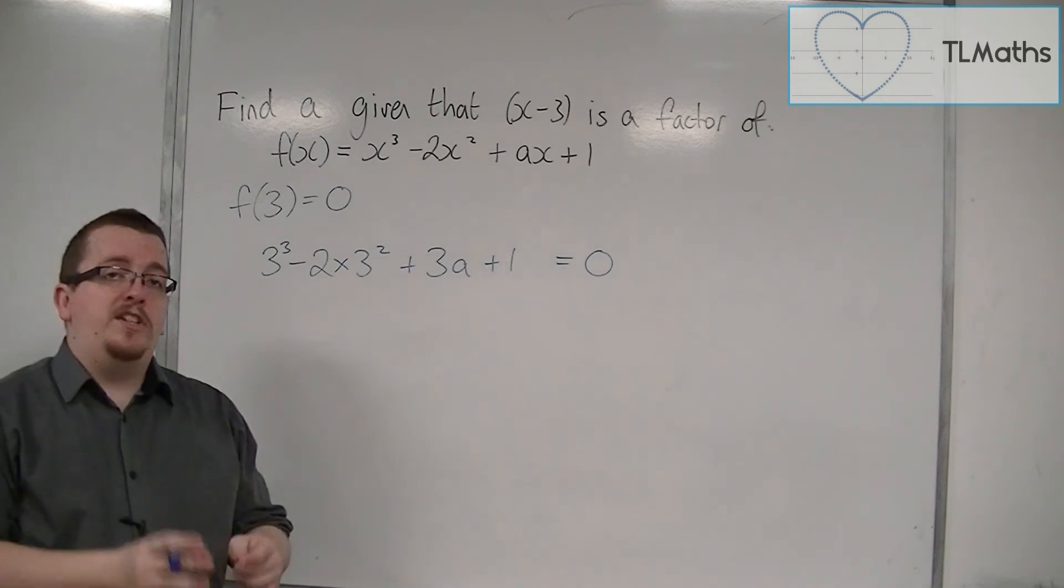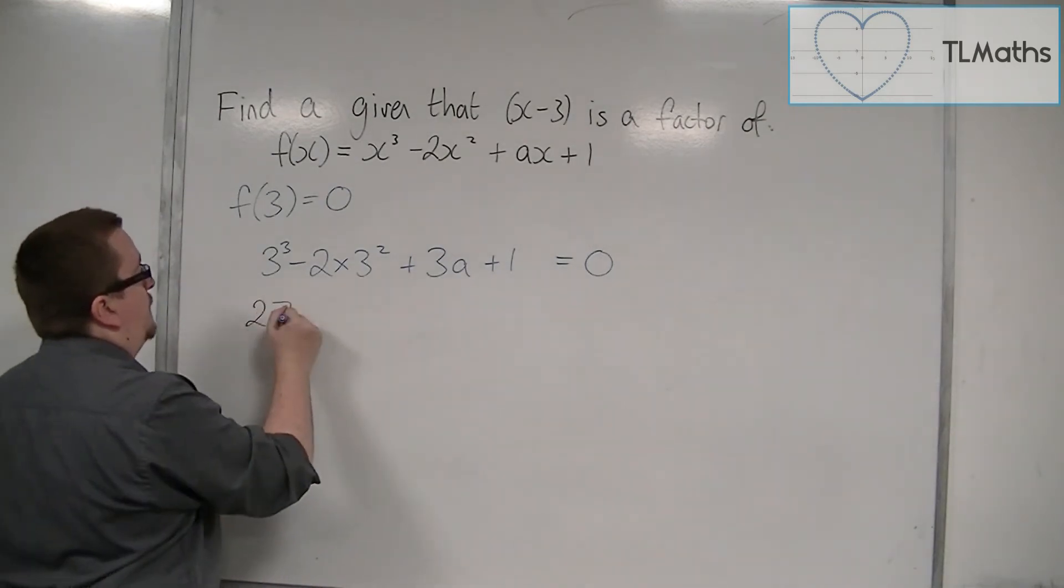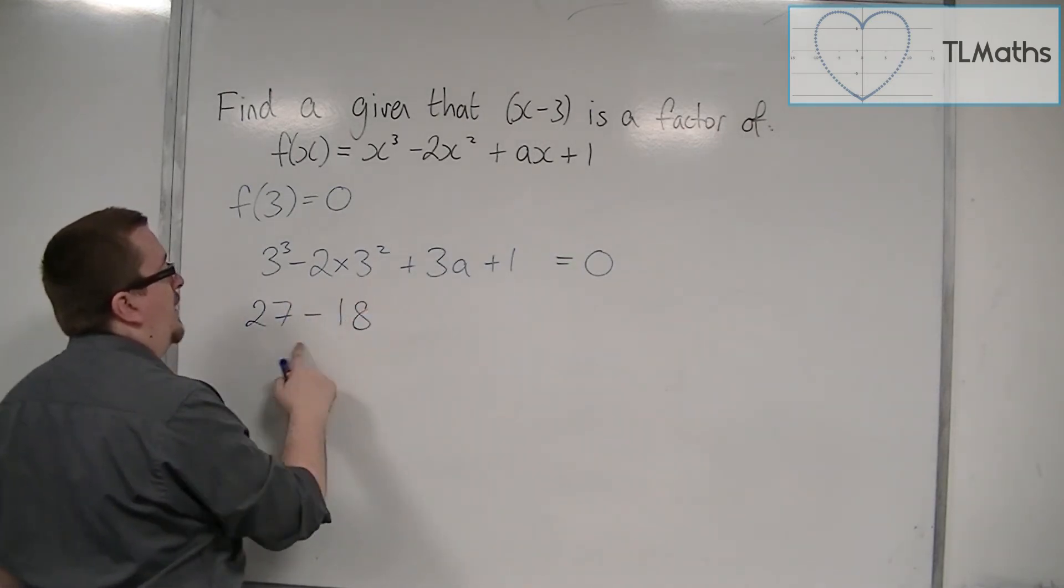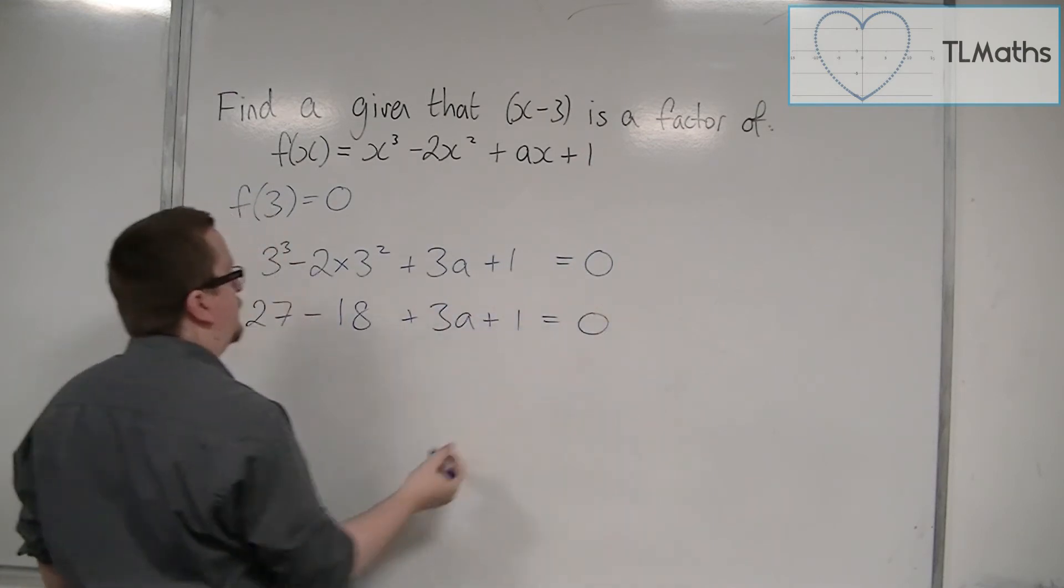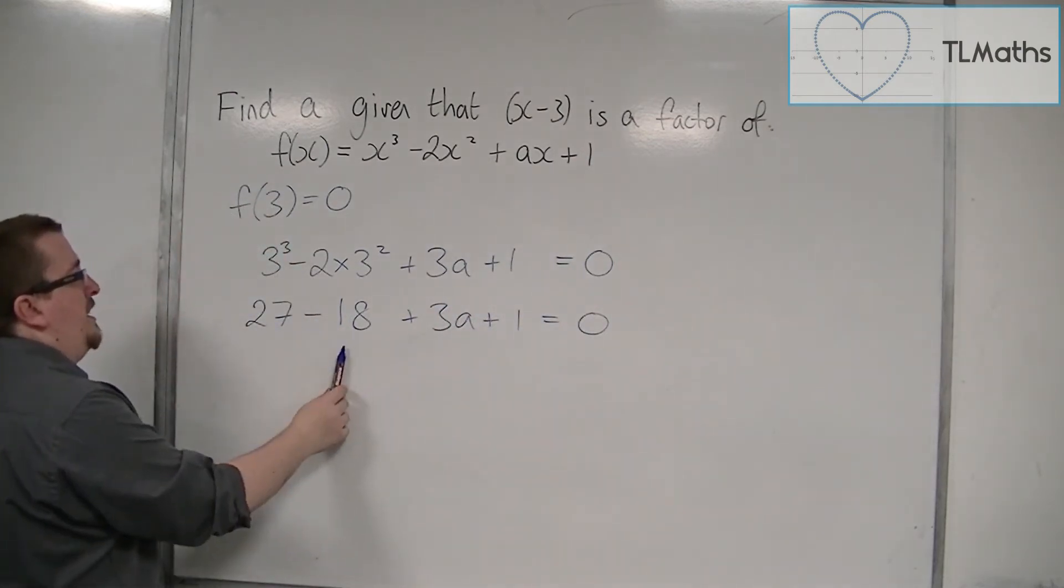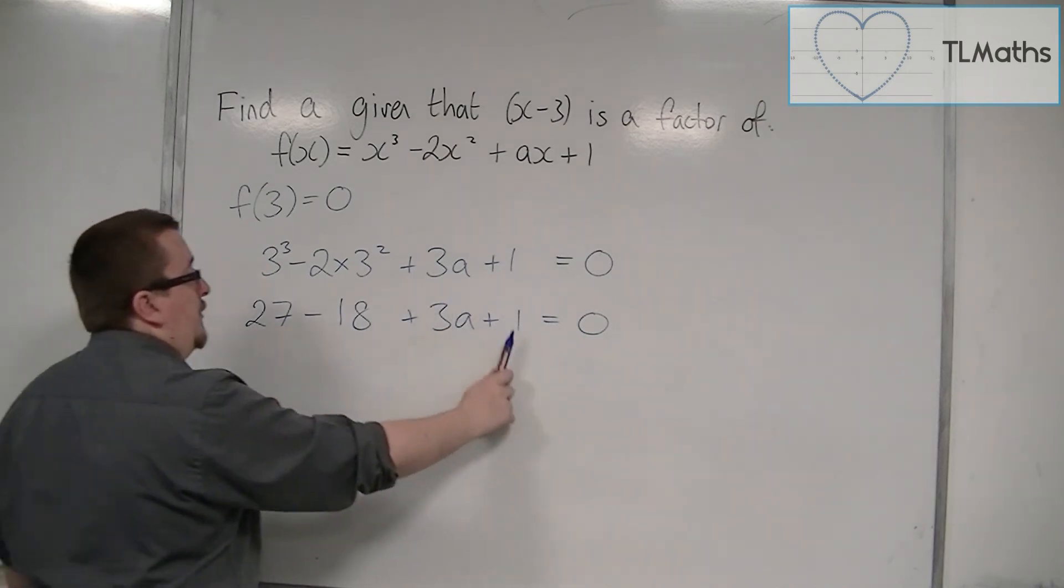And now all we need to do is solve this equation. So 3 cubed is 27, 2 lots of 9, so minus 18, plus 3a plus 1 is 0. So 27 take away 18 is 9, plus the 1 is 10.